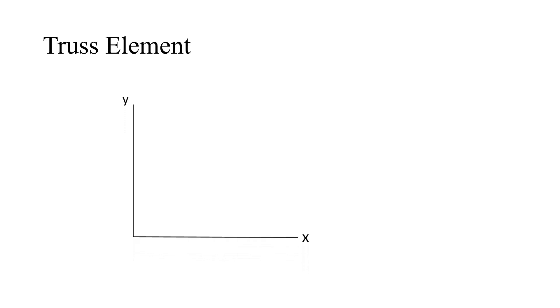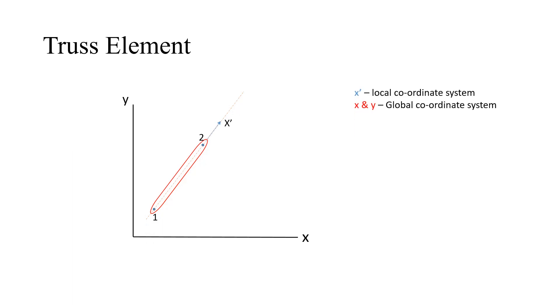We will see what is a truss element. To understand it, we consider two different coordinate systems in FEA. One is the global coordinate system X and Y, and the other is the local coordinate system X dash. Consider a truss element with nodes 1 and 2 and element length LE. X dash indicates the local coordinate system, while X and Y indicate the global coordinate system.